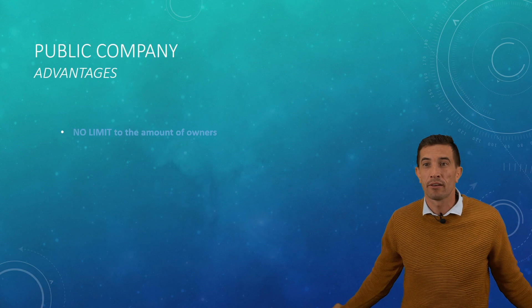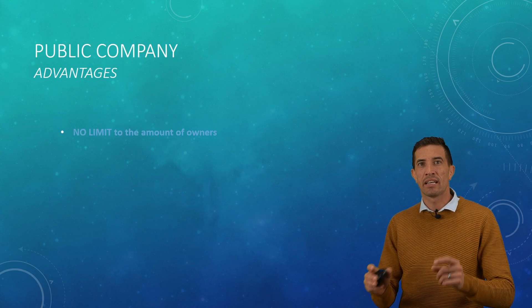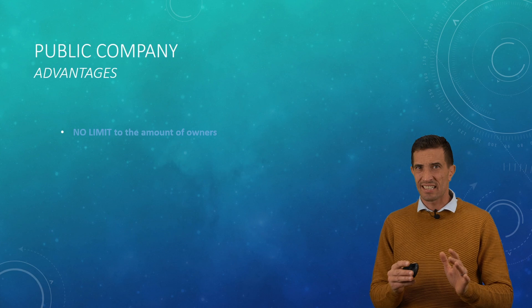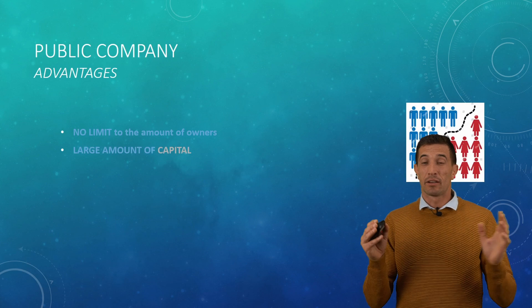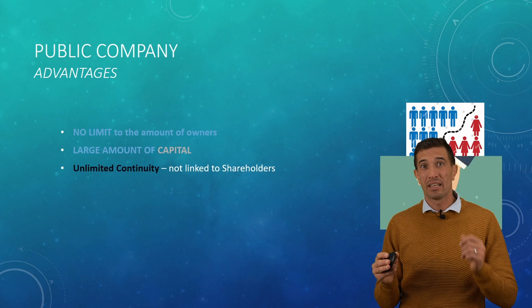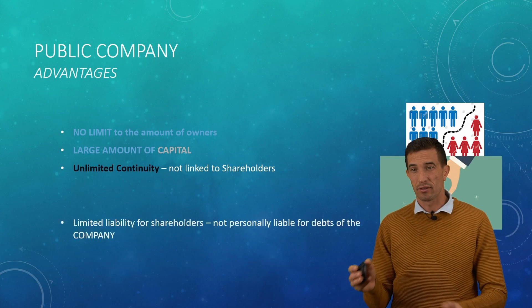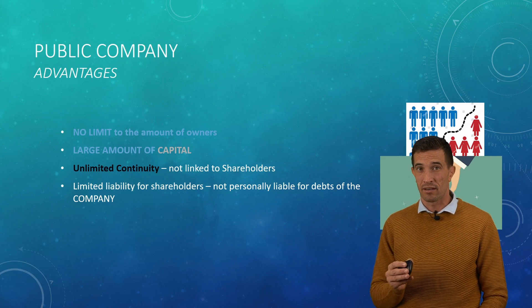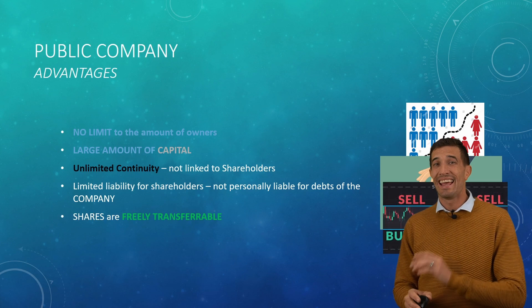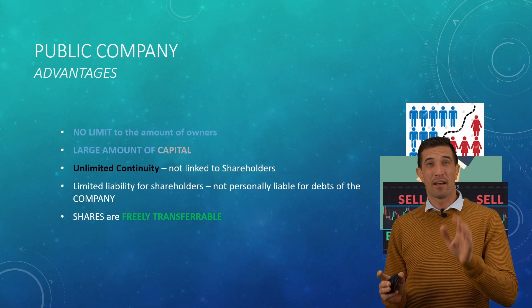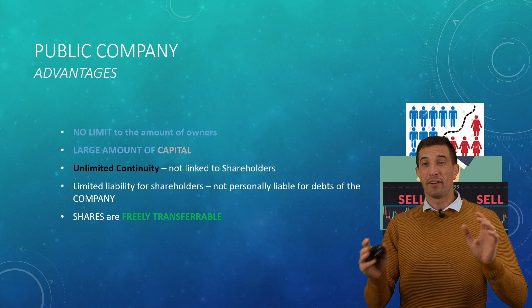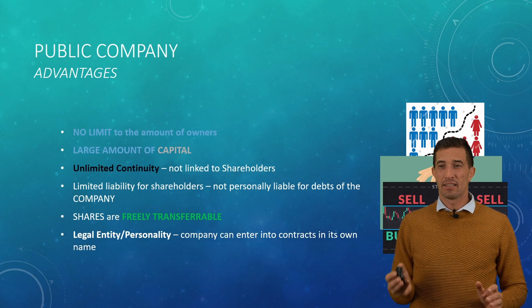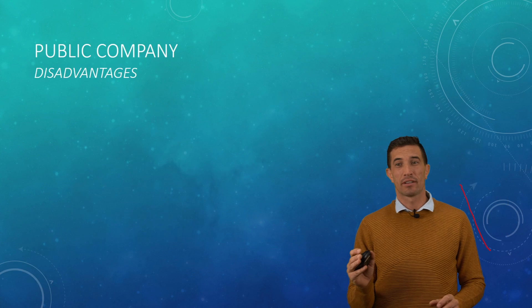Advantages: there's no limit to the amount of owners or shareholders. Anyone can buy or sell shares on the JSE — you can do it right now, though it's risky if you don't know what you're doing. You can raise a large amount of capital, but you also have to share the profit with a lot of people. There is unlimited continuity. There is limited liability for shareholders — you can only lose what you've invested into the company and they won't seize your personal assets. You can sell your shares freely on the JSE, unlike private companies where there is no easy or free transferability. And because the company is a legal entity, it can enter into contracts in its own name.